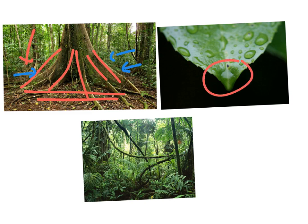Another adaptation are the drip tips. This is where water and rain will go onto the leaf, and so that the leaf is not weighed down by the water, the drip tip allows water to run off the leaf nice and easily.